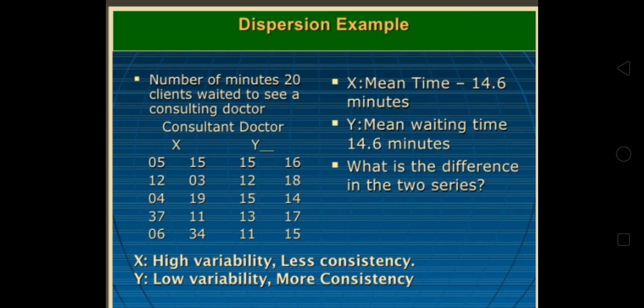Y series: 15, 12, 15, 13, 11, 16, 18, 14, 17. X has high variability or less consistency. Y has low variability or more consistency. X mean time: 14.6, Y mean time: 14.6. What is the difference between these two series?